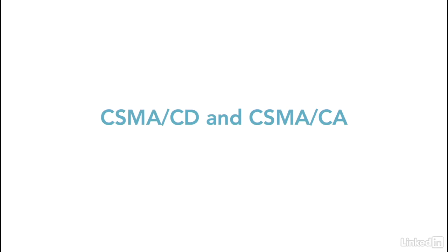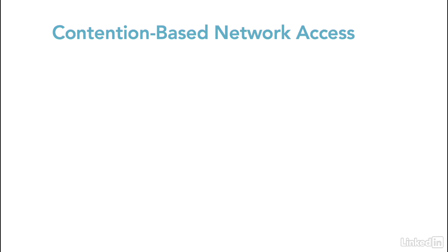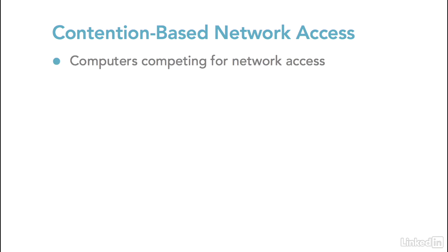Next we want to address two common ways that nodes or computers use to access the network directly — in other words, to be able to get onto the physical network itself. The two ways we're going to look at are both contention-based network access methods, which were briefly mentioned in a previous video. Basically, in a contention-based network access method, the computers compete for network access. There are two types commonly used in modern networks.